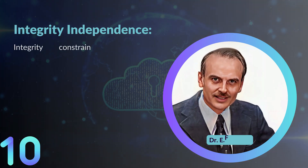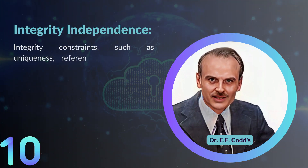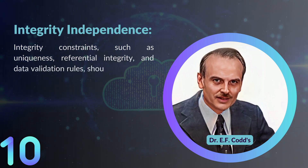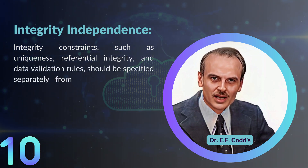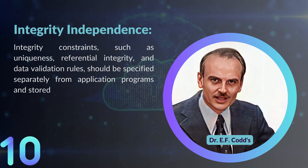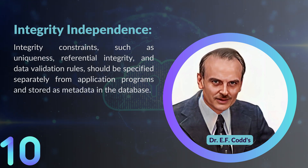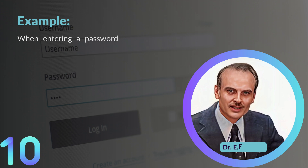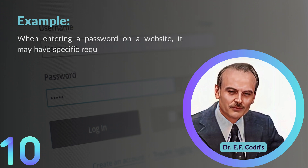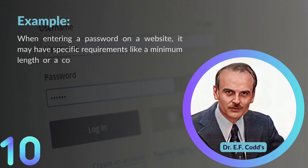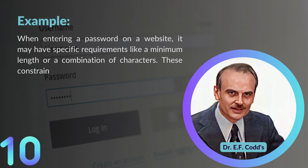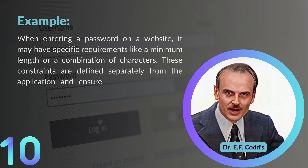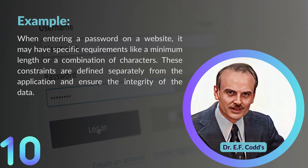Rule number ten: Integrity Independence. Integrity constraints, such as uniqueness, referential integrity, and data validation rules, should be specified separately from application programs and stored as metadata in the database. For example, when entering a password on a website, it may have specific requirements like a minimum length or a combination of characters. These constraints are defined separately from the application and ensure the integrity of the data.